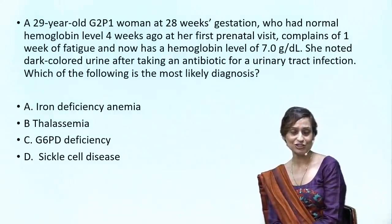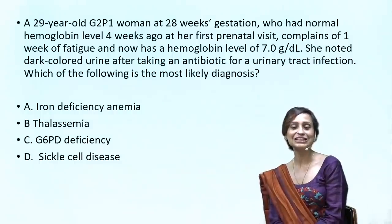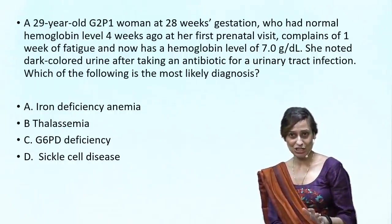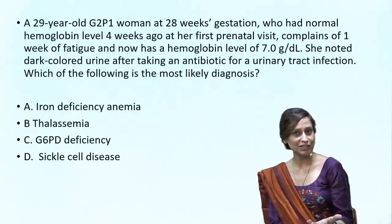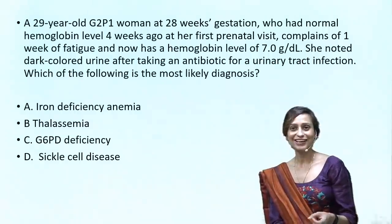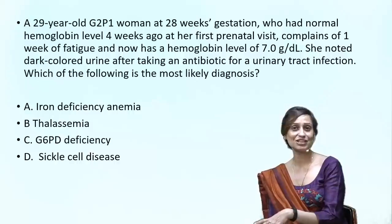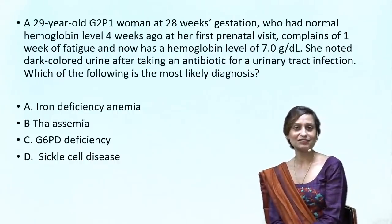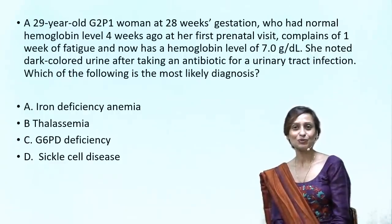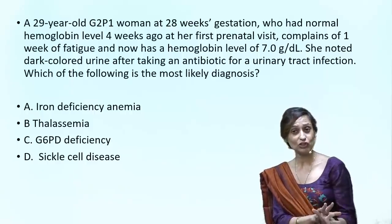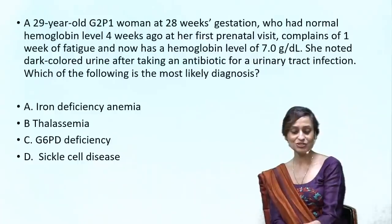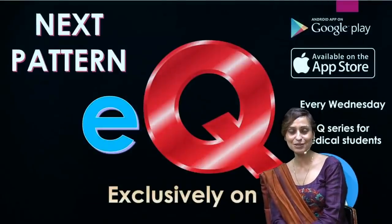The answer to this question is C — G6PD. That's what integrated videos are all about. The MCQ begins looking like an obstetric question, then you realize it involves pathology — types of anemias. Then you realize there's an element of biochemistry — an enzyme deficiency. Then you need to know the details of that enzyme deficiency and its association with drugs, so pharmacology comes in too. That's the beauty of integrated questions: using all your information together to reach a clinical diagnosis.